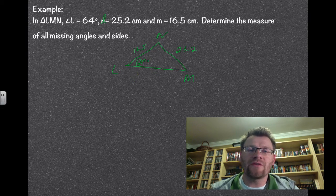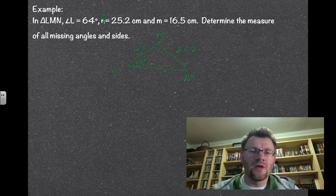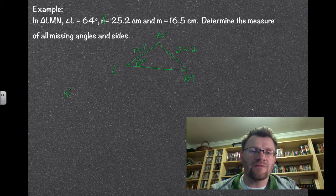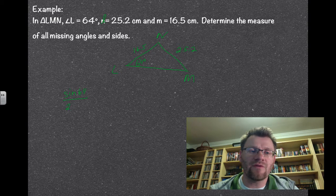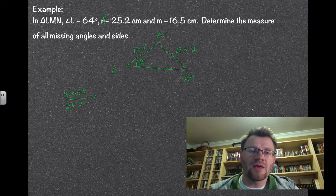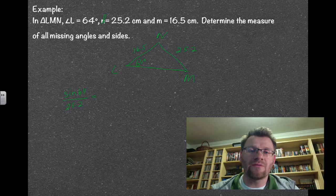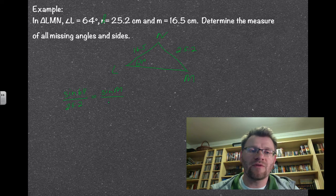So I need to find these two angles and this side. We're going to use the sine law to do that. The sine law tells me that sine of 64 divided by its opposite side, so that's 25.2, is equal to sine of any missing angle opposite its side. So it'll have to be sine of m opposite 16.5.